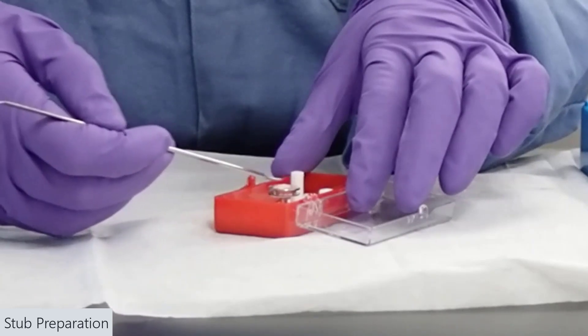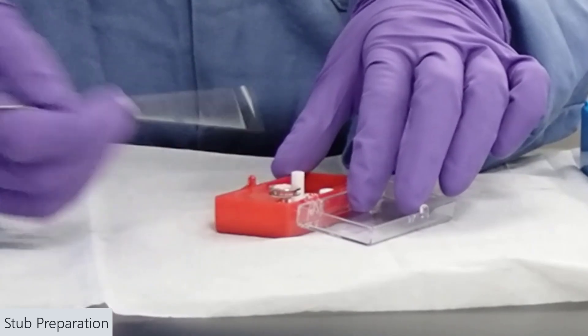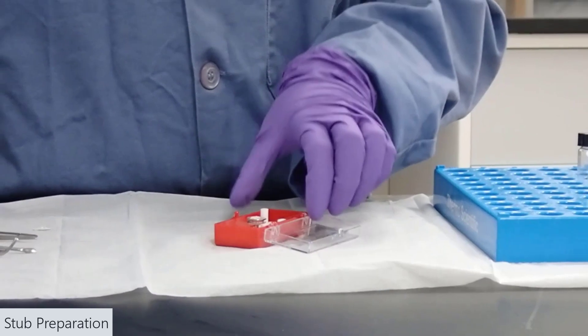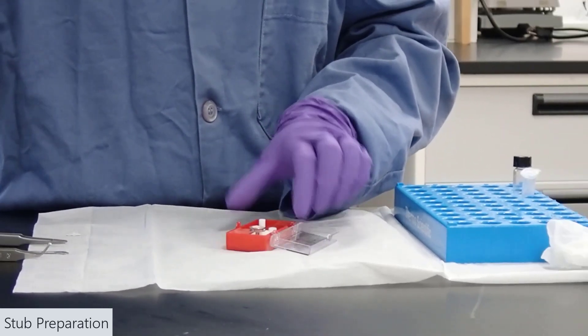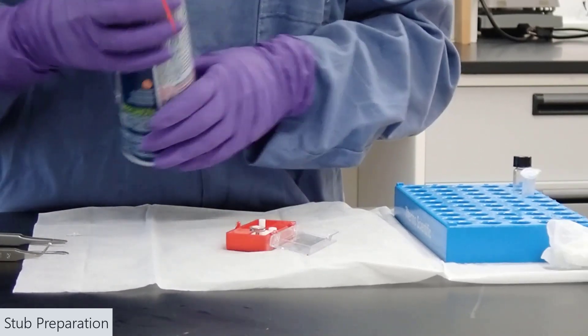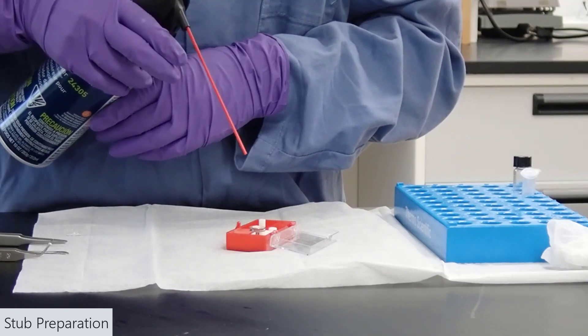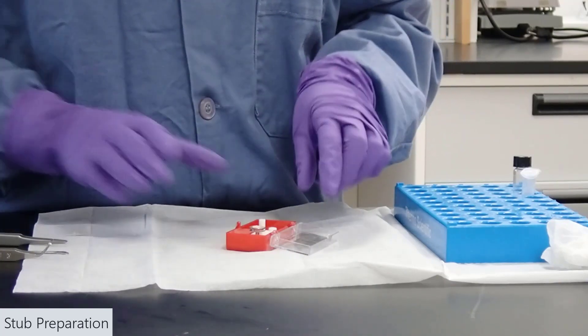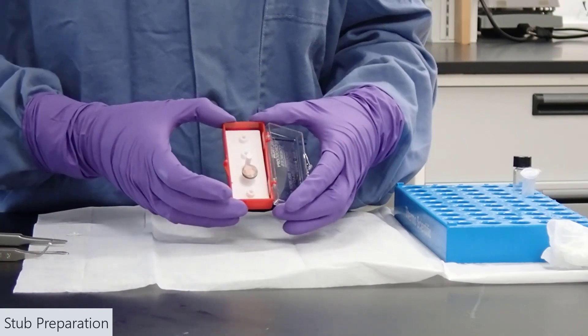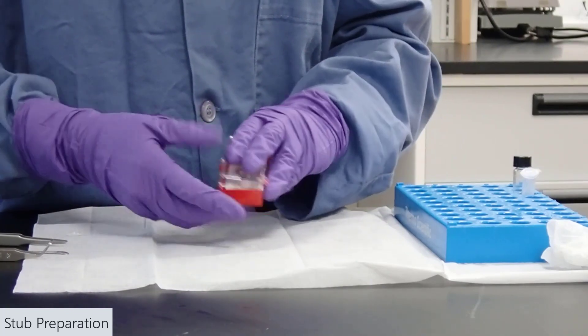So, put the powder on and then rub it, spread it out a bit on the stub. And the most important thing is, after we do this, we need to use compressed air to blow off any excess material. You don't want this excess material to go into your SEM and ruin the vacuum, so make sure you do that.